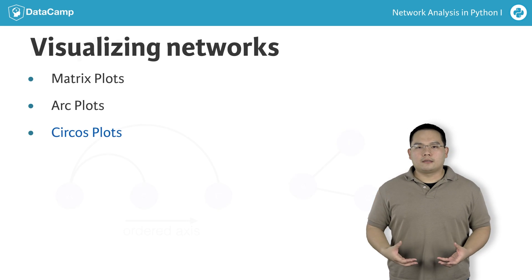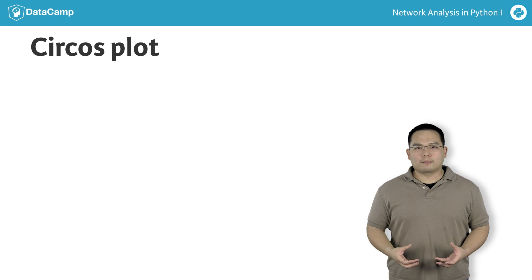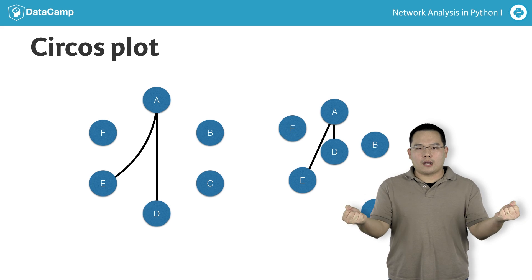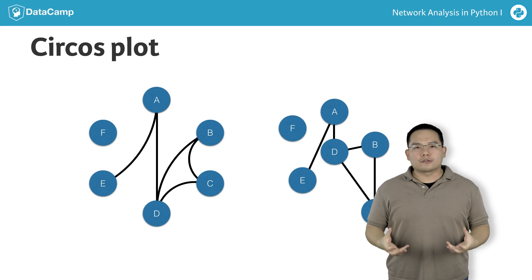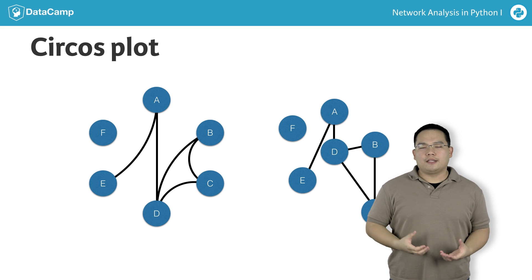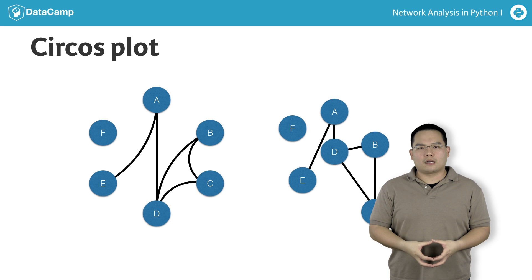Let's now move on to Circos plots. A Circos plot is a transformation of the arc plot, such that the two ends of the arc plot are joined together into a circle. Circos plots were originally designed for use in genomics, and you can think of them as an aesthetic and compact alternative to arc plots.